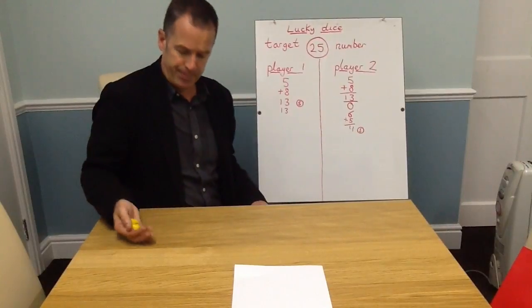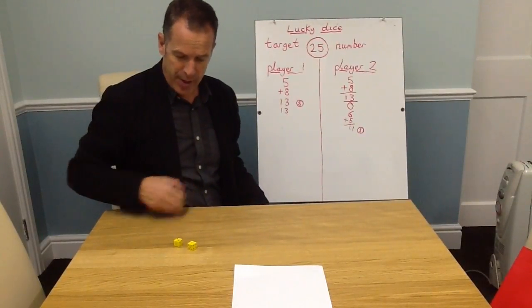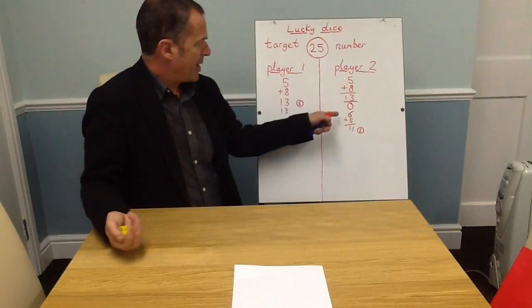Two and two is four. So I add four to eleven which makes fifteen. Now do I want to have another go? I think I need to be brave.